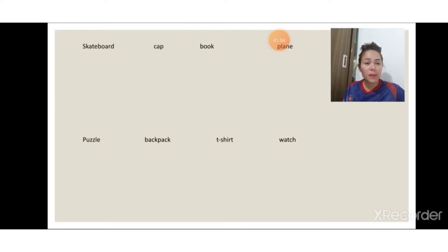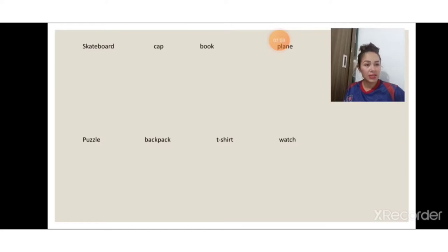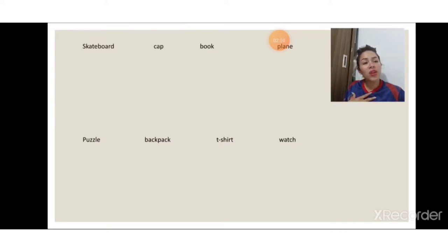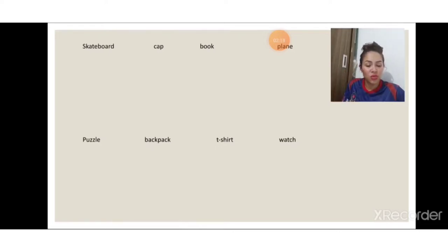Nessa parte nós vimos sobre o 'what is it' e o uso da resposta 'it'. O que é isso? Ah, it's a watch, it's a cap, it's a t-shirt. Nesse 'what is it' — o que é isso? — para responder eu usava o 'it' novamente e respondia com o nome junto: it's a — o nome do objeto.